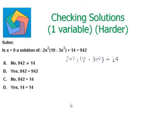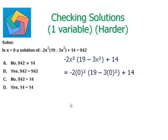Writing down the LHS of this equation: negative 2x² times open bracket 19 minus 3x² close bracket plus 14. Plugging in the value of x equals 0, we get negative 2 times 0² times open bracket 19 minus 3 times 0² close bracket plus 14. Since 0 squared is 0, we get 0 times 19 plus 14, which equals 14.